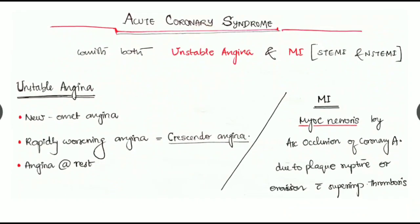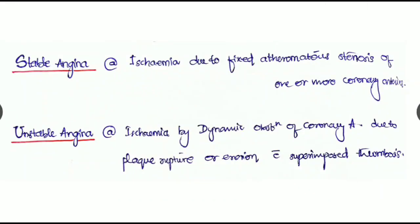Unstable angina can be a new onset angina or any rapidly worsening angina known as crescendo angina, or any angina at rest. Myocardial infarction is myocardial necrosis by acute occlusion of a coronary artery due to any plaque rupture or erosion with superimposed thrombosis.